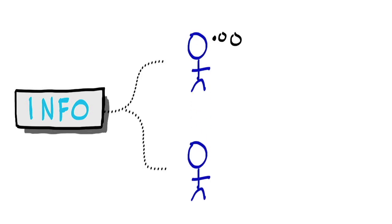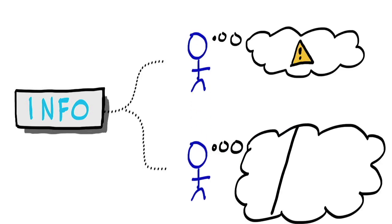You can present the identical information to two equally intelligent people and can get very different perceptions of riskiness.